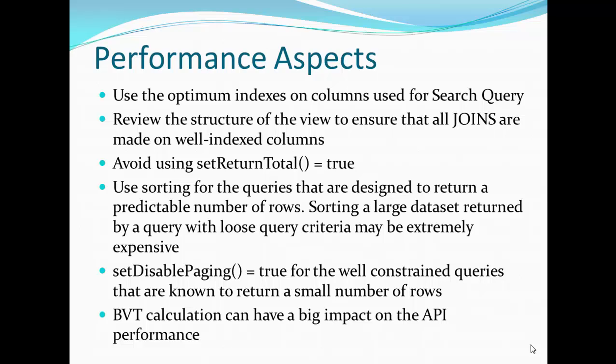Regarding sorting — we use the sorting feature to display results in a sorted format. Whenever you use sort with a large dataset, the query is long-running and very expensive from a performance perspective. Make sure you only use sorting if you know the criteria will return a small set of data. Also, set_disable_pagination — if we are getting hundreds of records and don't want to process all at once, we can use pagination. Setting set_disable_pagination to true will disable it, which can improve performance if the response contains a small set of data, but not if it contains a large set.